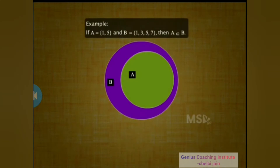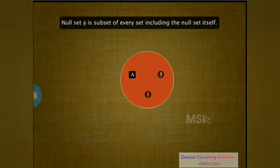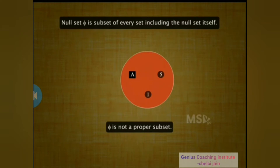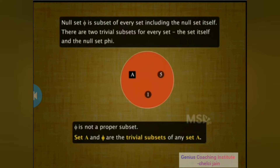For example, in the given sets A and B, every element of set A — that is, 1 and 5 — is an element of set B. At the same time, the elements 3 and 7 of set B do not belong to set A. In this case, A is a proper subset of B. How about the null set φ? Since we can't find any elements in φ that are not in A, all elements of φ are in A, so φ is a subset of every set, including φ itself. But φ is not a proper subset of set A. In fact, there are two trivial subsets for every set: the set itself and the null set φ.